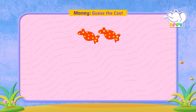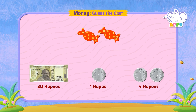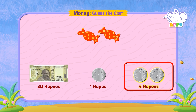We have two candies. Can you guess the cost? Is it 20 rupees, 1 rupee, or 4 rupees? 20 rupees is too costly for two candies. 1 rupee is too less for two candies. 4 rupees sounds just right. Exactly right!